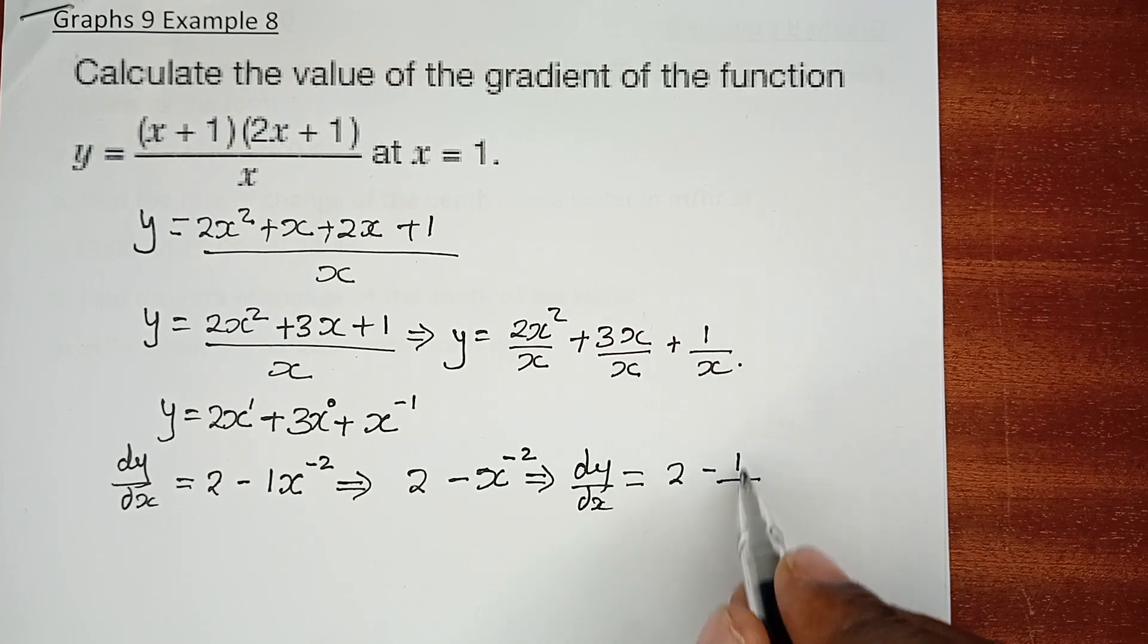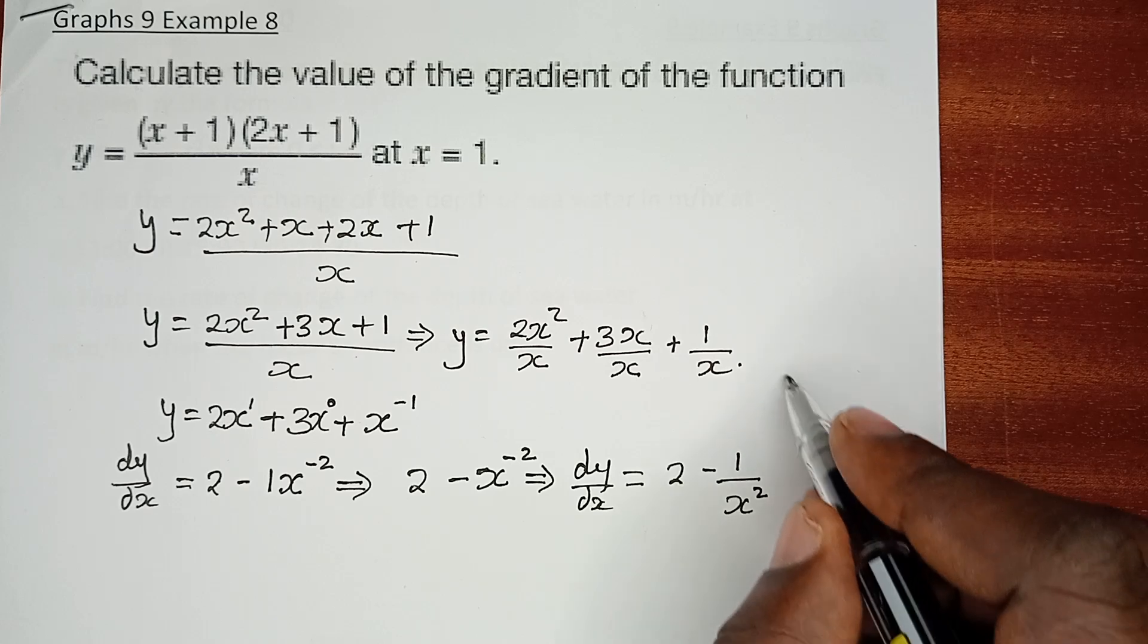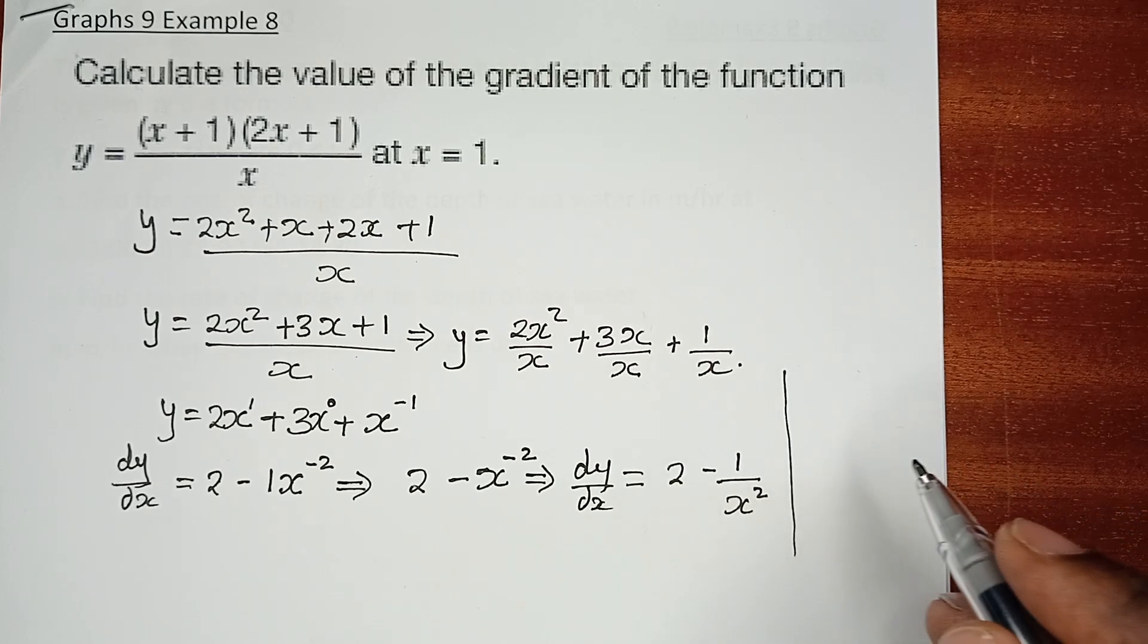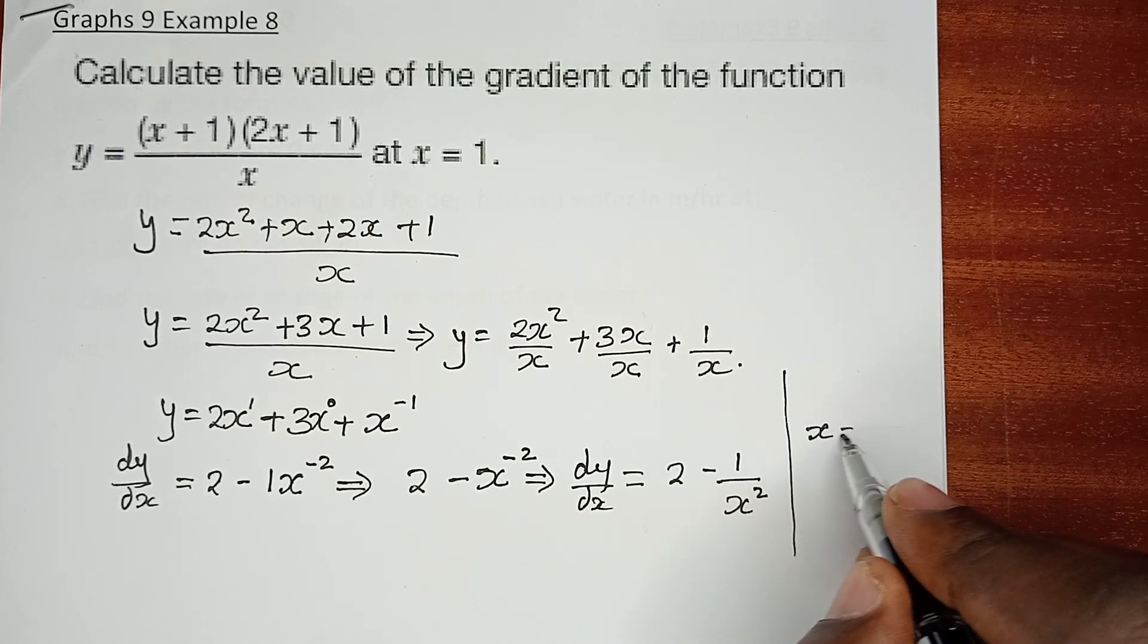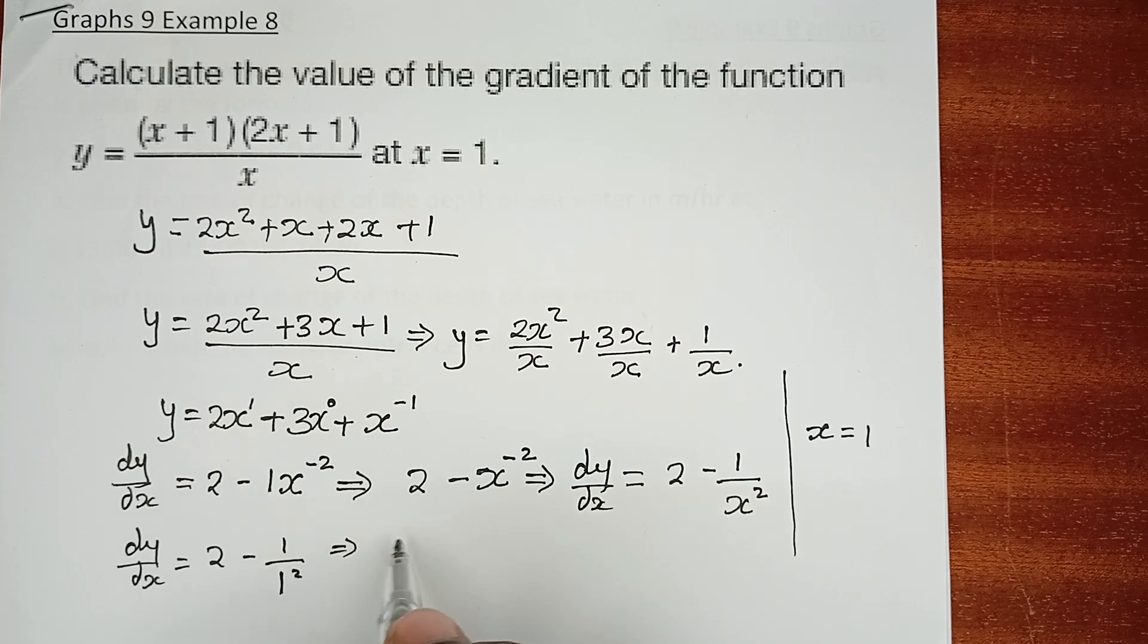But remember, not at every point, at the point where x equals 1. So we just need to substitute with this differentiation and find dy/dx is 2 minus 1 over 1 squared, and this gives us 2 minus 1 over 1.